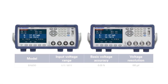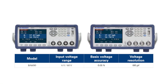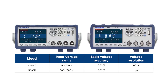The series includes two models: the BA6010 and the BA6011. Both models have two voltage ranges that allow the user to take advantage of higher resolution in the lower ranges. The BA6010 has its best resolution of 100 microvolts in the 6-volt range, while the BA6011 has its best resolution of 1 millivolt in the 30-volt range.